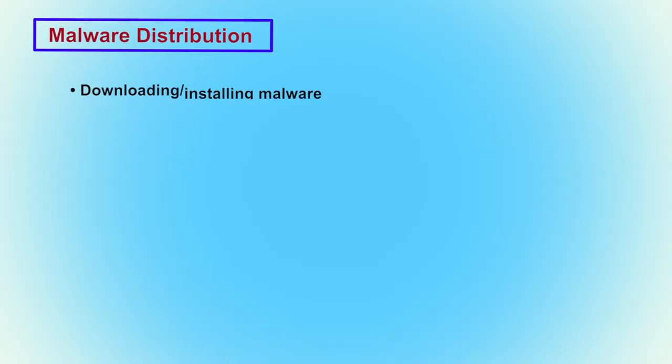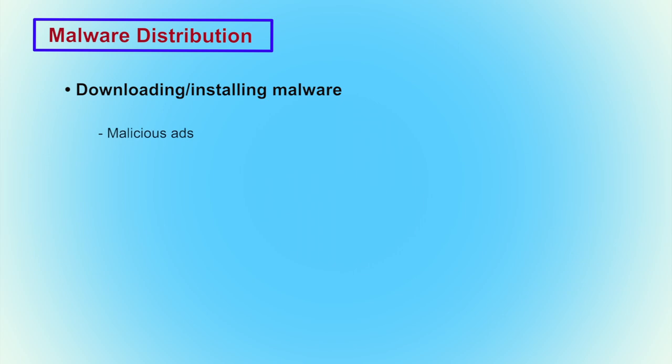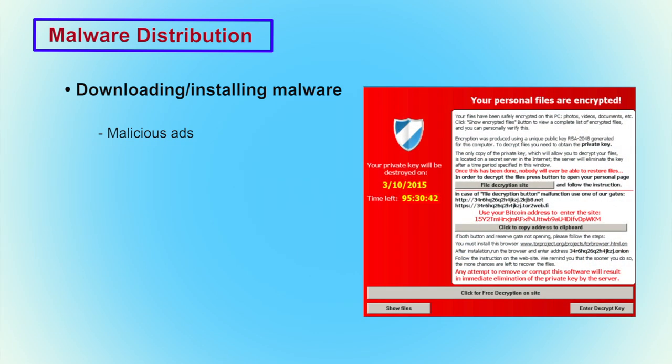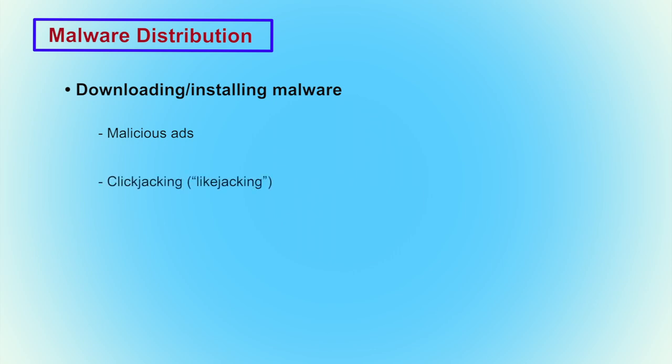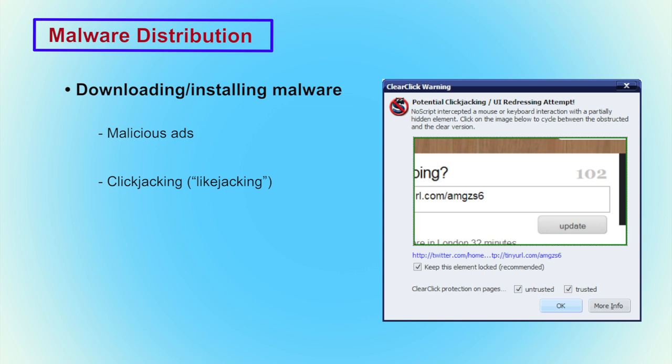The first category of cyber threat is malware distribution. When a user visits a social networking website and performs activities after logging in, some posts may contain malicious content that downloads to their system and damages it or causes loss of information assets. Several categories of malware are possible through social networking websites. Malicious ads: when doing social networking, some ads will pop up that lead to malicious websites which download malware. Clickjacking: when clicking on a post, like, share, or similar action, there may be a chance of downloading malware.